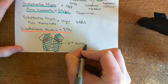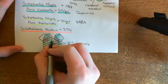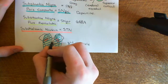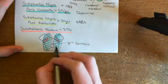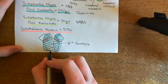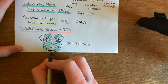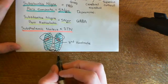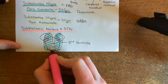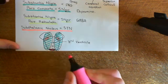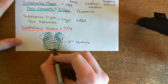The third ventricle is bounded below by the midbrain and on the sides by the thalamus. At the back, you have a structure known as the pineal gland. It's not part of the basal ganglia, but just for a bit of background neuroanatomy, there is the pineal gland here.